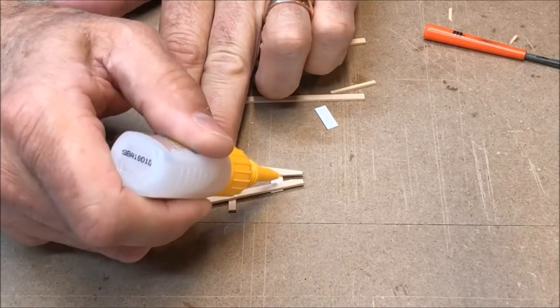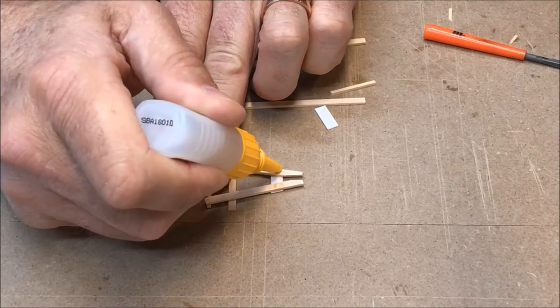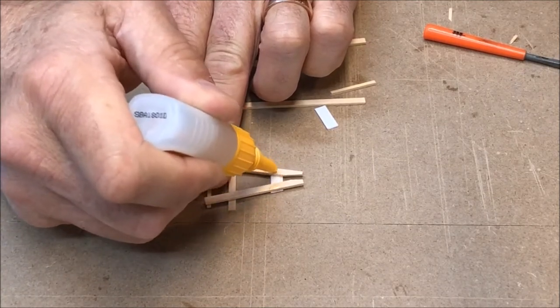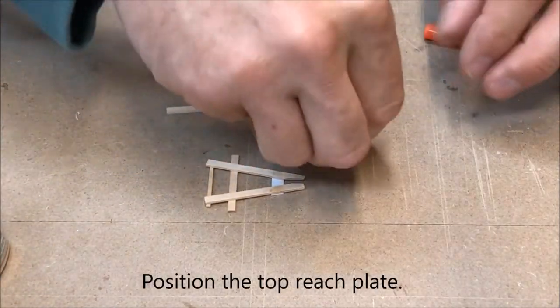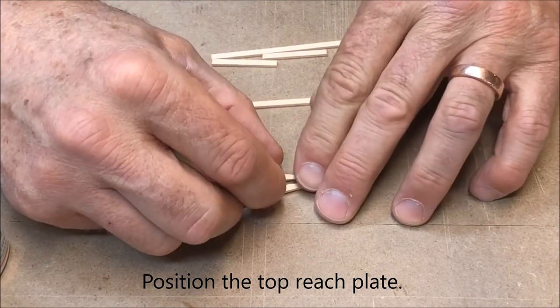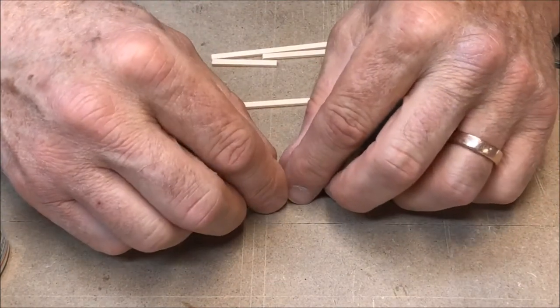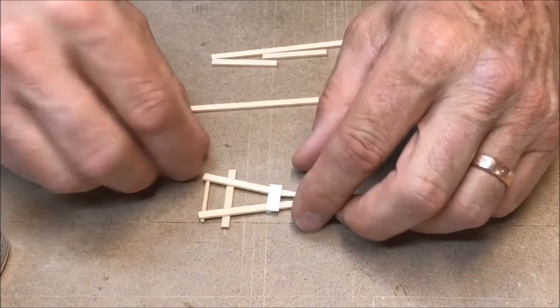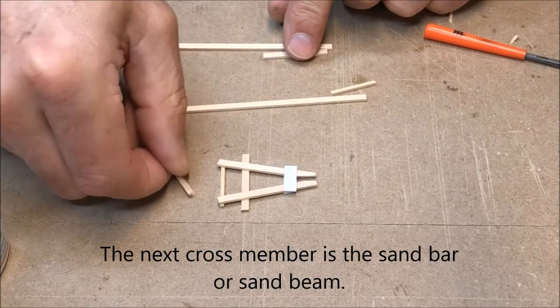Let's go ahead and put the other parts in. I want to put in the other reach plate. Again the front edge needs to be back a little bit away from the front edge of the hound so that we can have room for our drop tongue to go up and down.